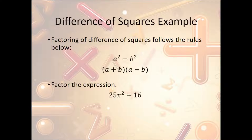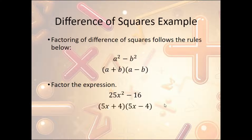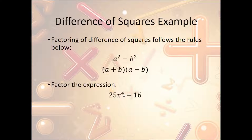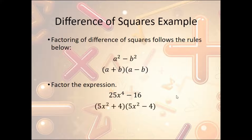Another example: 25x squared minus 16. Well, 25x squared is really (5x) squared, and 16 is really 4 squared. So we can rewrite this as (5x + 4)(5x − 4). That's our factored version. And another example: 25x to the 4th minus 16. x to the 4th is really (x squared) squared, and 25 is a perfect square. So this is (5x squared + 4)(5x squared − 4).